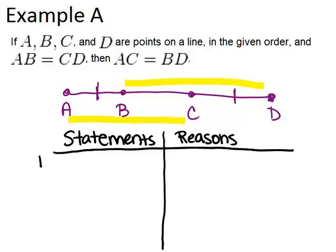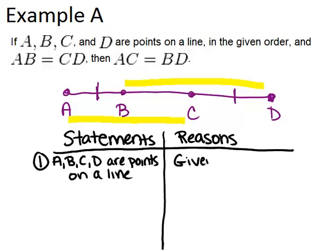Now the first thing that you're pretty much always going to write in your proof is the given information. And the given information for us was two things. A, B, C, D are points on a line. That was the first thing. So the reason I know this fact is that it was given to me. And the second thing that was given to me is that AB equals CD. Remember, we marked that in our picture.